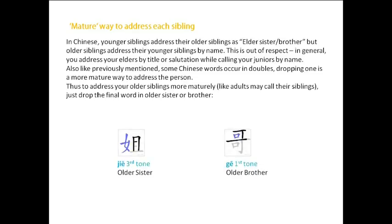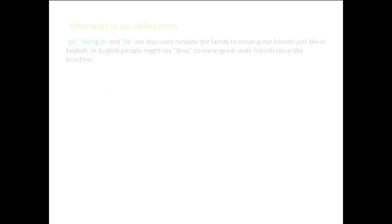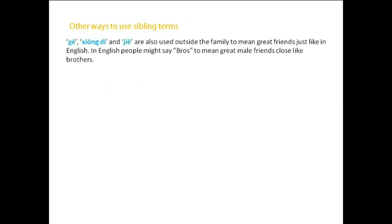So it becomes 姐, the third tone, meaning older sister. Or 哥, the first tone, meaning older brother. Here are some more ways to use sibling terms. 哥, 兄弟, and 姐 can also be used outside of the family to mean great friends, just like in English. In English, people might say things like 'bros' to mean great male friends, close like brothers.